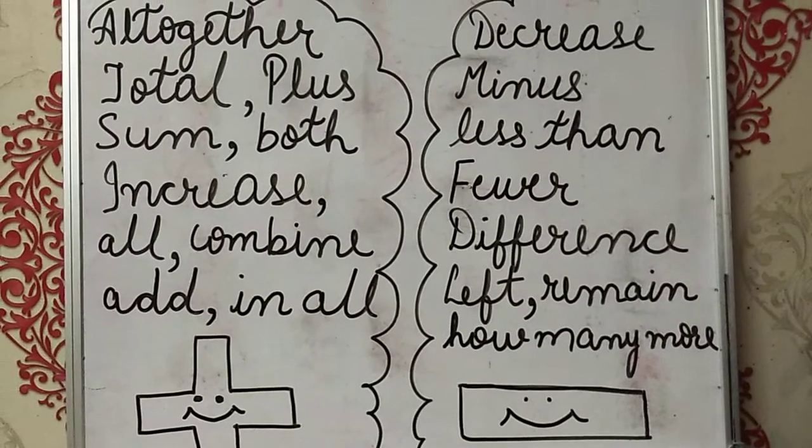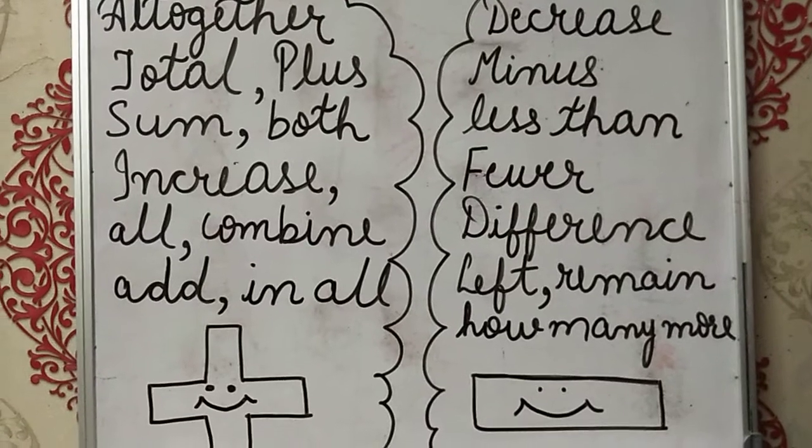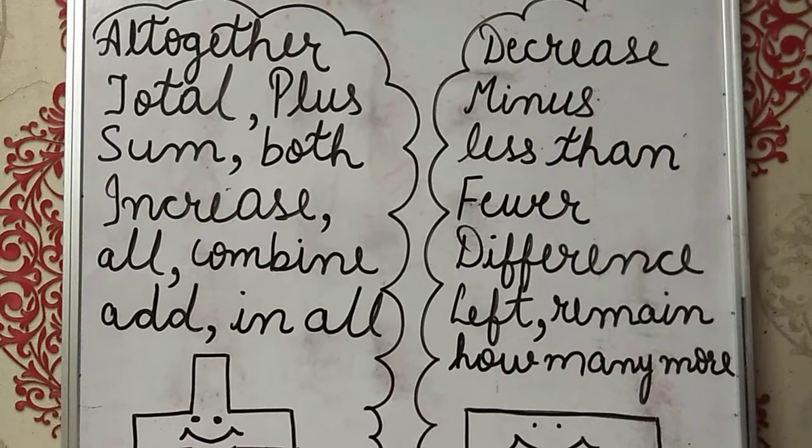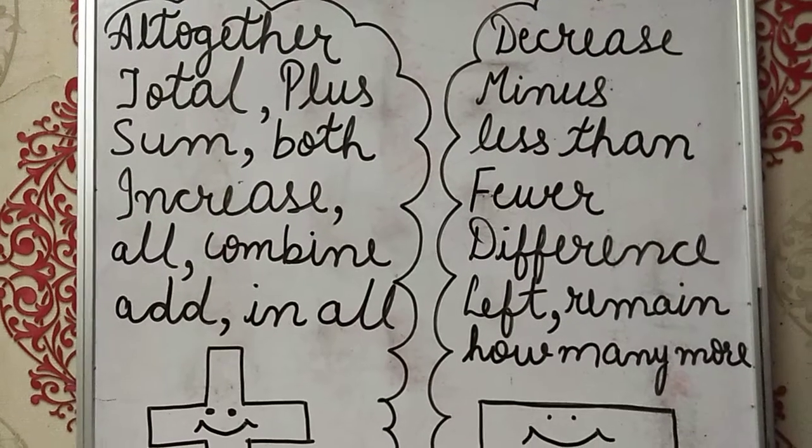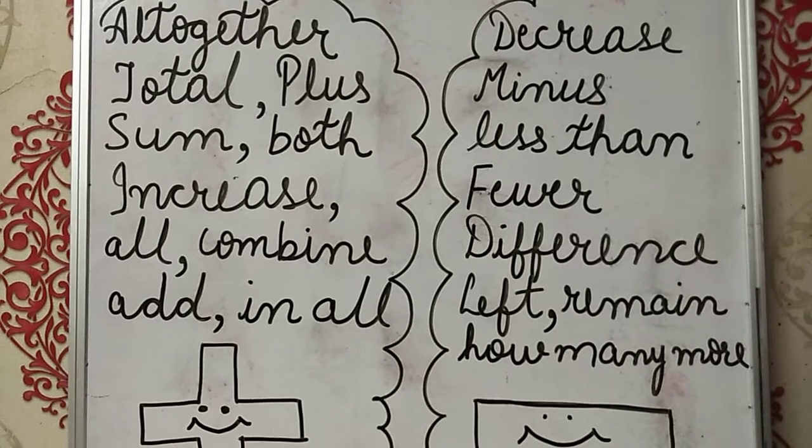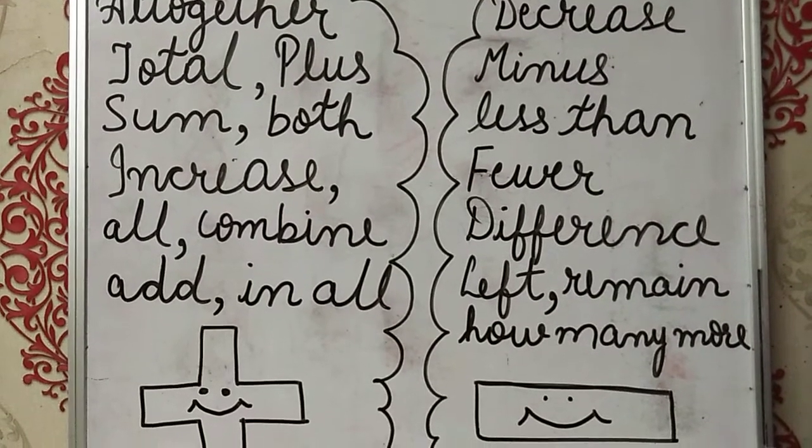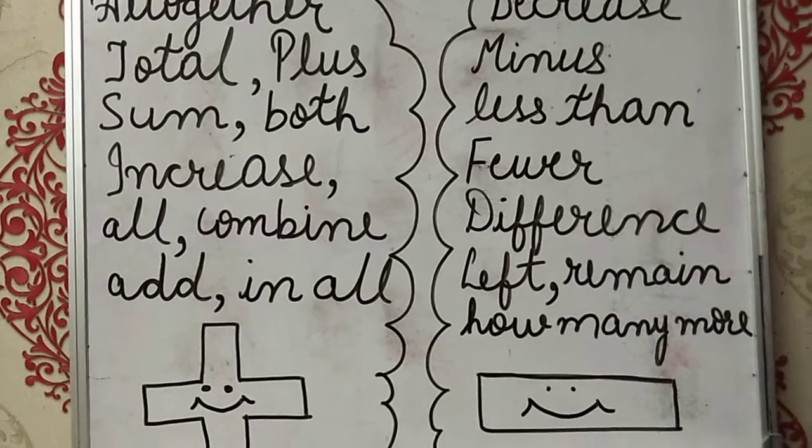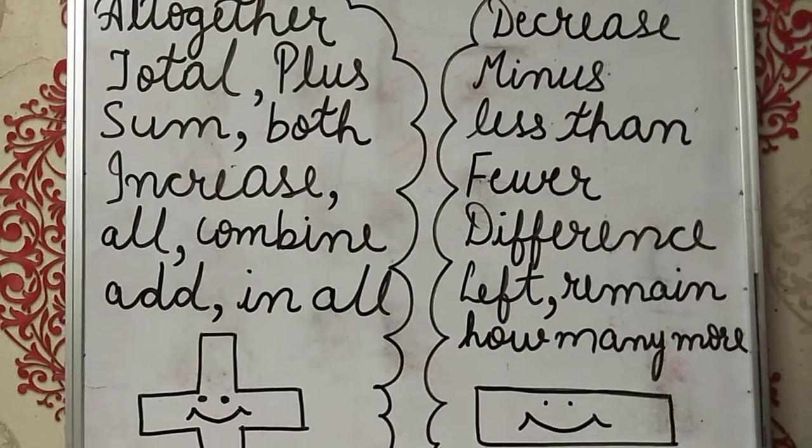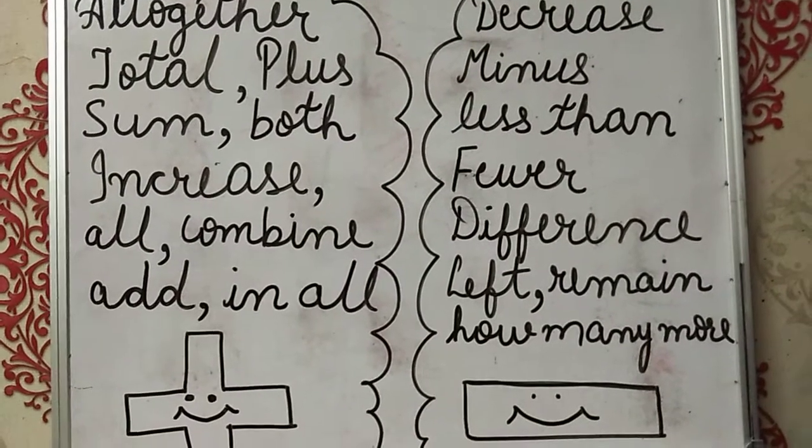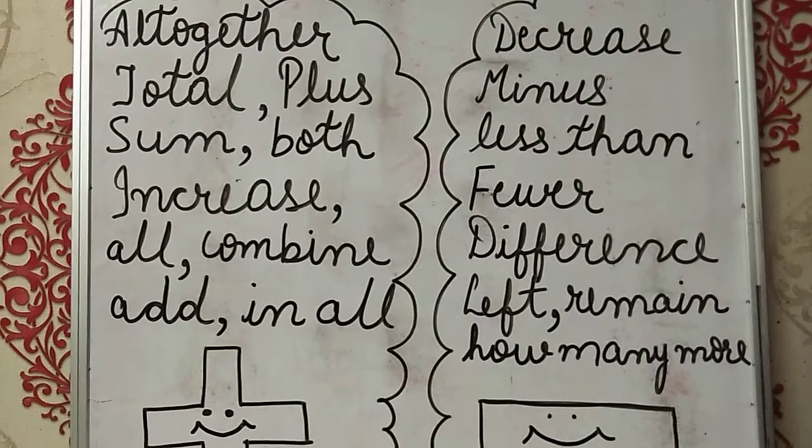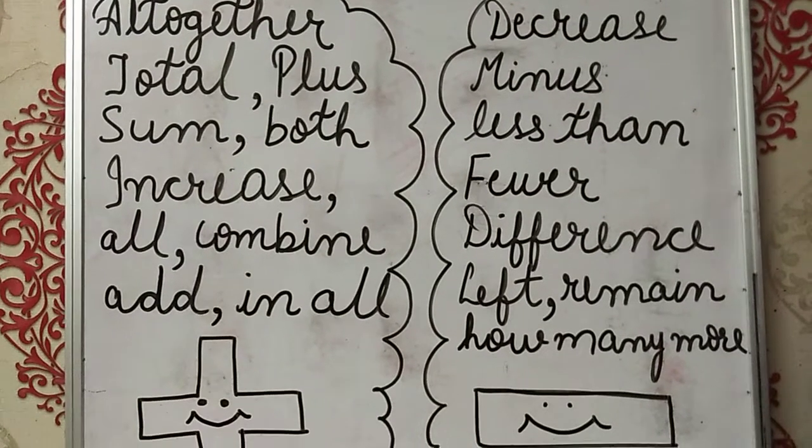Suppose we have to find out what is the difference between our father and the mother, or our mother is how much less than in age than our father. So this will indicate the keyword for subtraction minus. Fewer means less, difference - the difference between the heights of two friends.